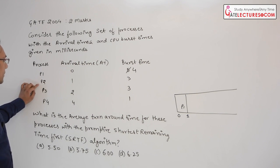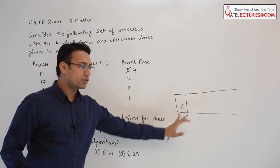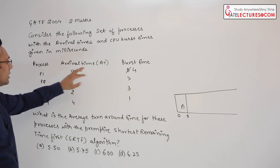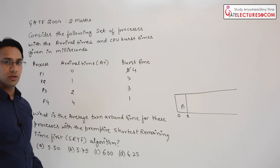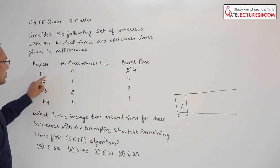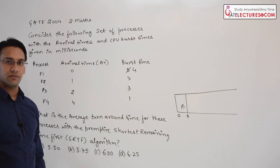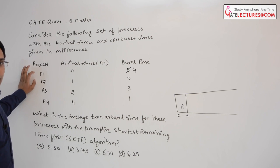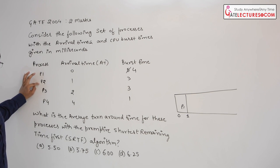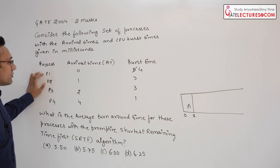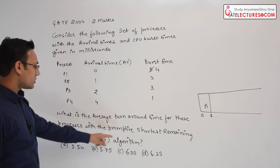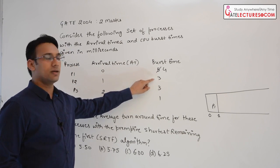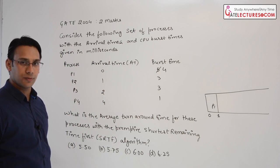At time 1 we have two processes: P1 with remaining burst time 4 and P2 with burst time 3. Initially P1's burst time was 5. Now we have two choices — execute P1 or execute P2. Since it is the shortest remaining time first algorithm, P2 has the shorter remaining time, so we execute P2.